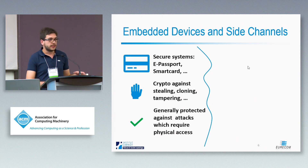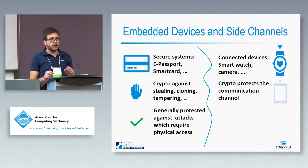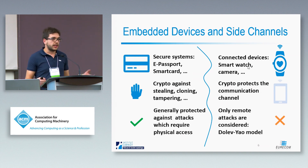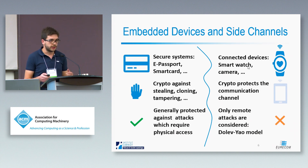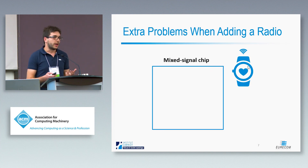Besides security-oriented devices, there are also other classes of embedded systems. One of the most popular are connected devices, like a smartwatch or an IP camera. These devices still use cryptography, but this time to protect the communication link, for example from a smartwatch to a smartphone. In this case, only remote attacks are usually considered, not physical attacks. If we want wireless connectivity, we also have to add wireless hardware — a radio.